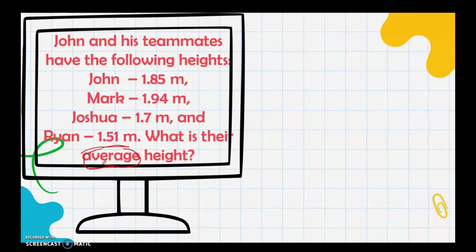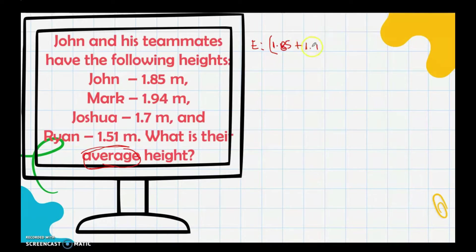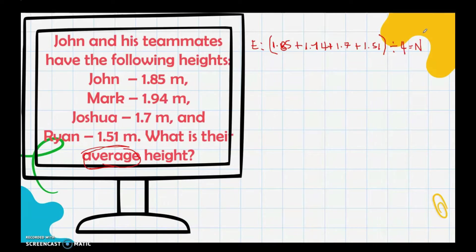When we say average, it involves addition and then division. First, add the heights of John, Mark, Joshua, and Ryan. The equation is: (1.85 + 1.94 + 1.7 + 1.51) ÷ 4 = n. We divide by 4 because we are finding the average of four persons: John, Mark, Joshua, and Ryan.